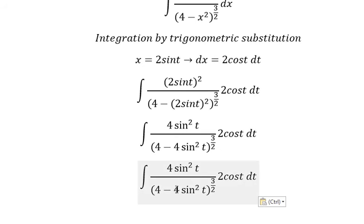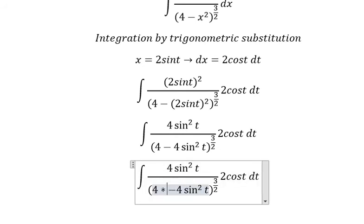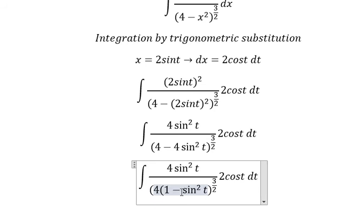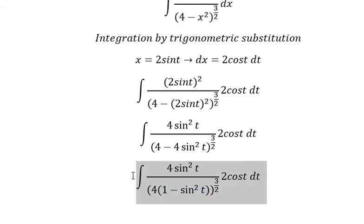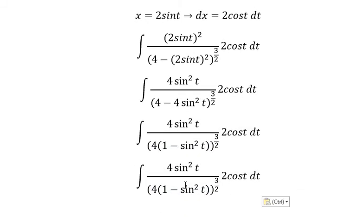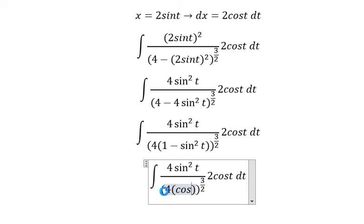We have 4 in the numerator and 4 in the denominator, so we can factor. Using the identity, 1 minus sine squared t equals cosine squared t.